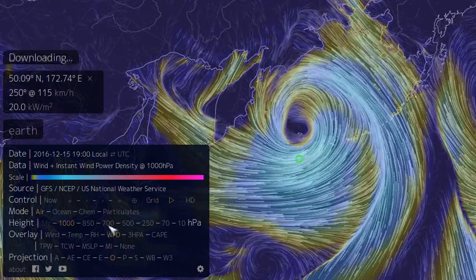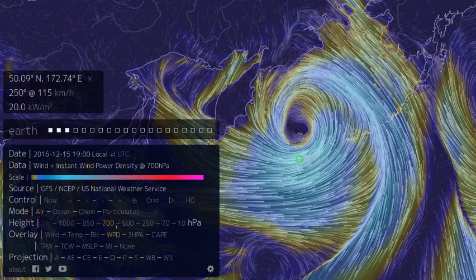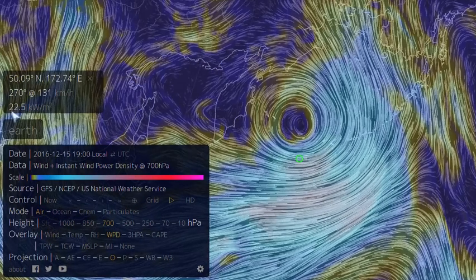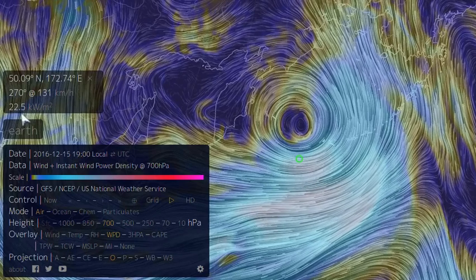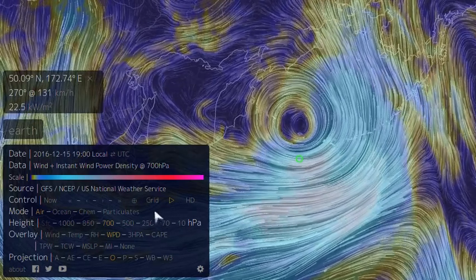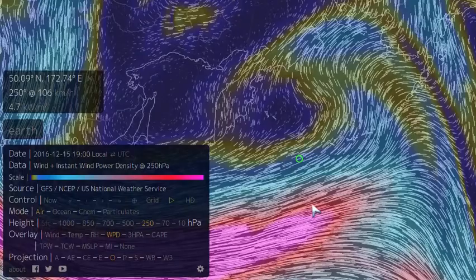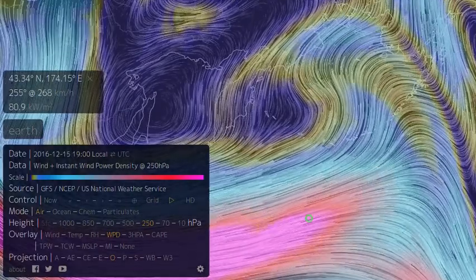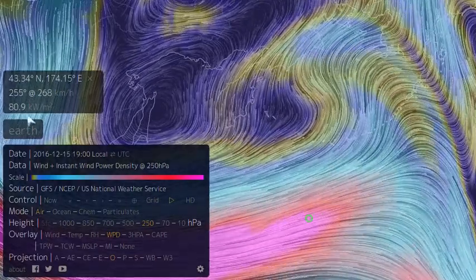If we step up, we can see that as we step up, it starts to increase. Now we have 22.5 kilowatts per meter squared. And if we step up into the jet stream, for example, we have 80.9 kilowatts per meter squared.